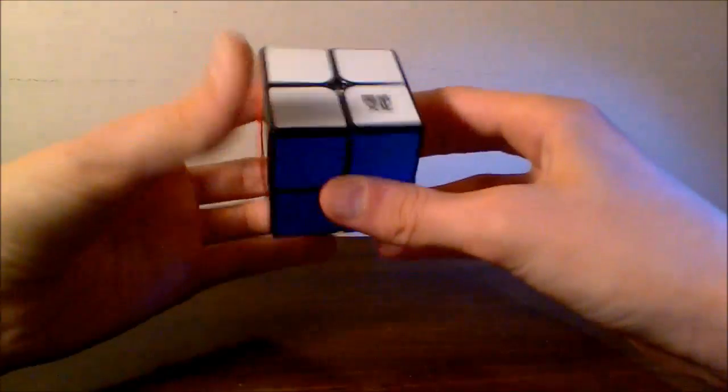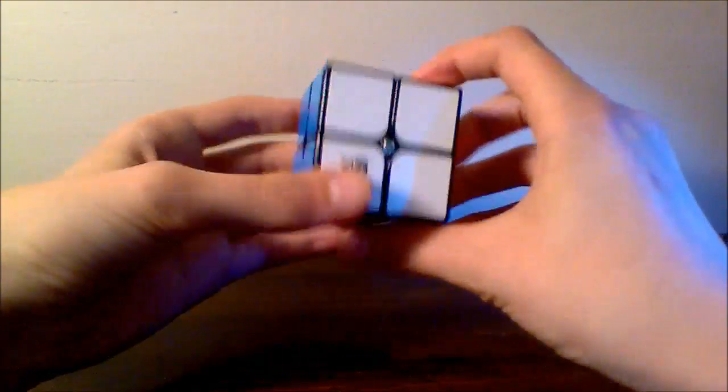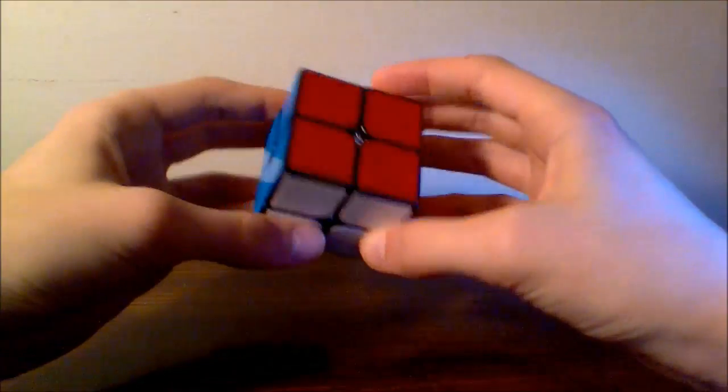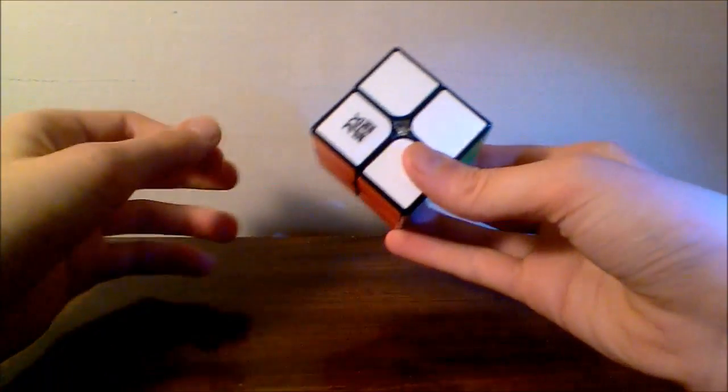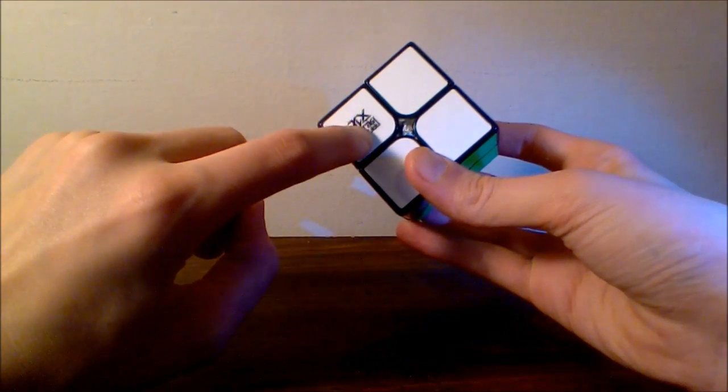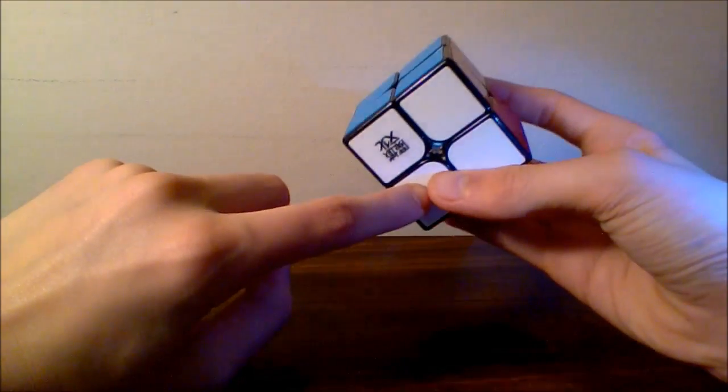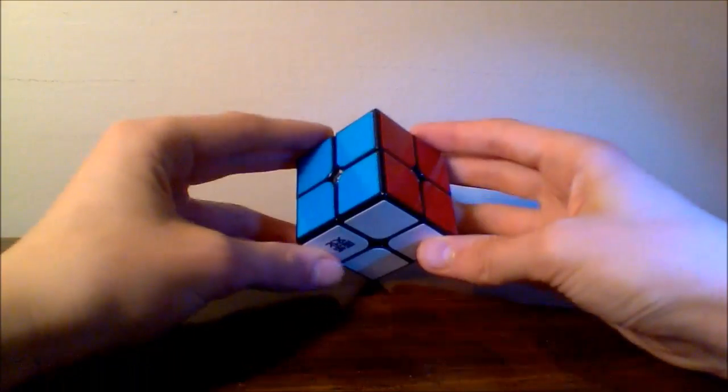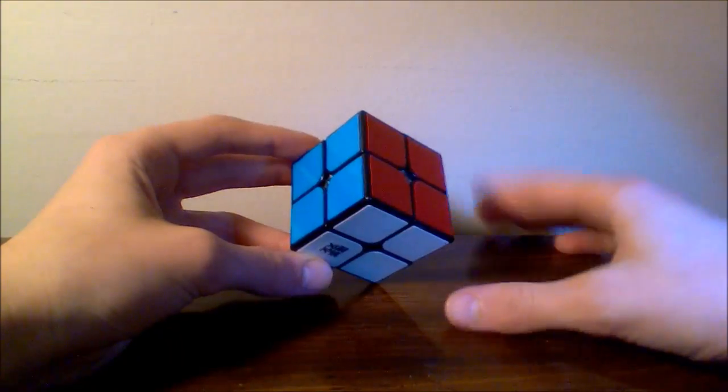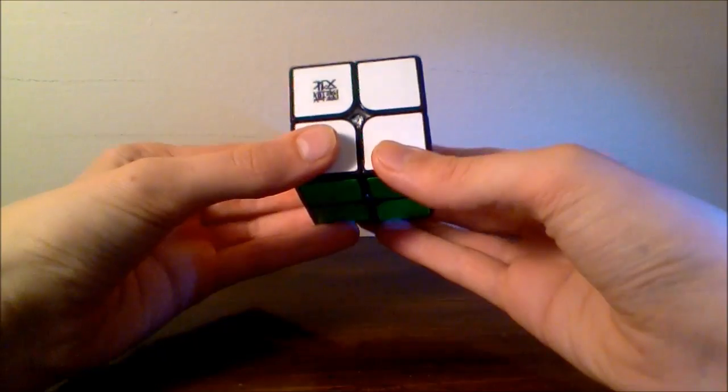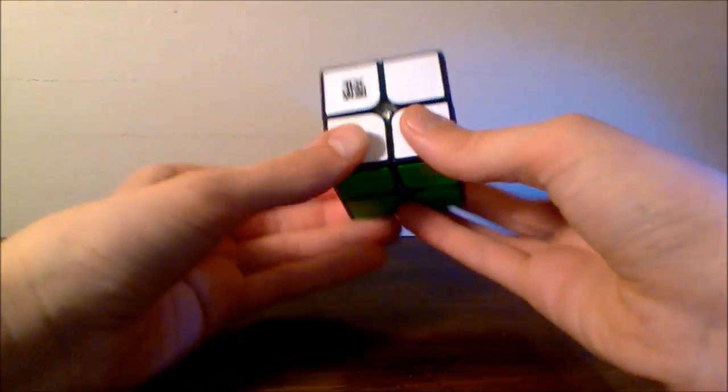So here we have the Moyu Lingpo. This is very nice. Straight out of the box, the only thing I noticed and wish was different was this Moyu sticker right here. I wish it was here or here because I prefer to stand up my cubes displaying them like this with a red, white, and blue pattern going circular like that. But that's just personal preference. So let's go ahead and get into first turns.